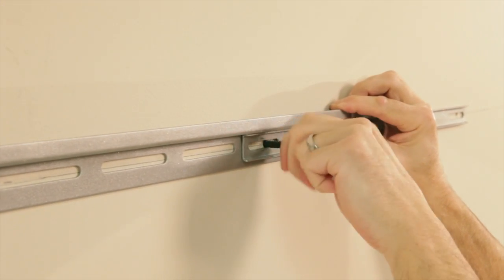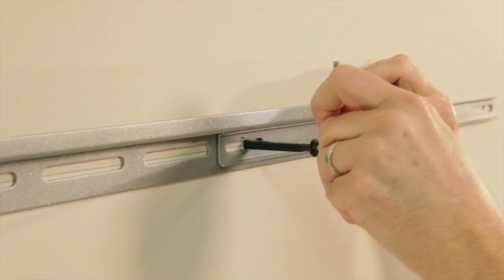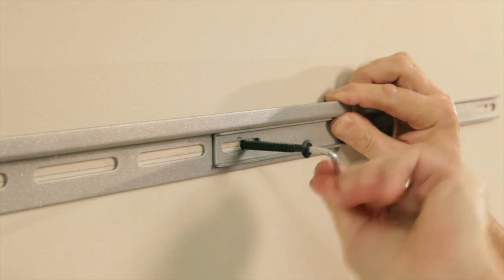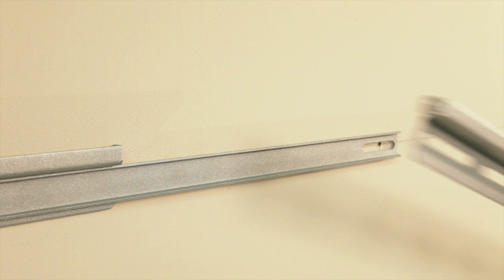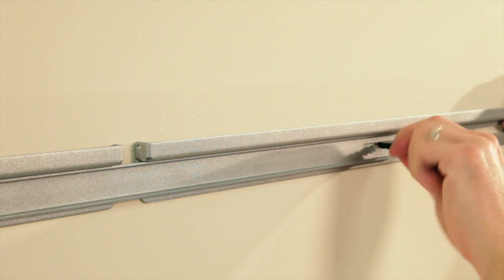Position the connecting brace so that it overlaps the last hole on the first metal rail. Insert the remaining screw through both the connecting brace and the metal rail. Slide the second metal rail behind the connecting brace and position it next to the first rail.